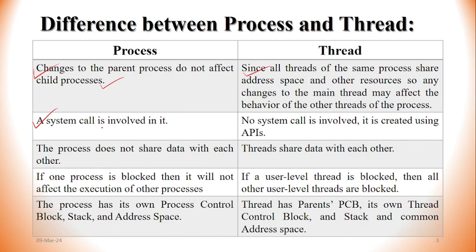A system call is involved in process creation. But a thread is created using an API — application programming interface. Also, processes do not share data with each other.